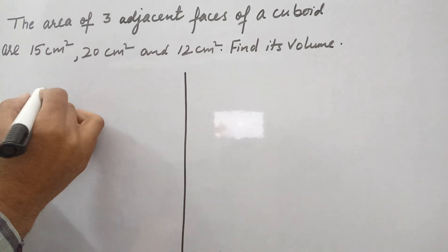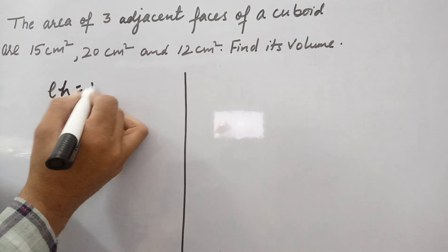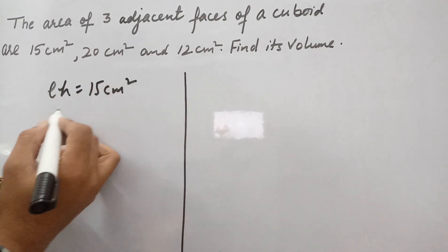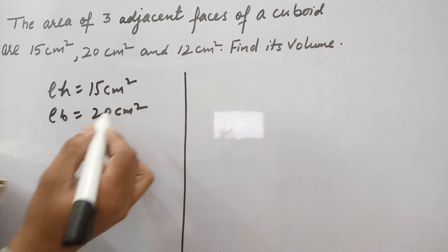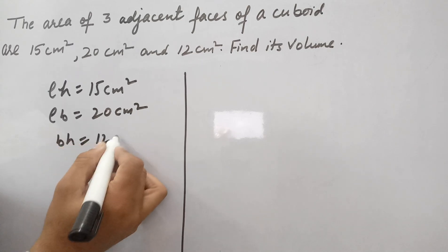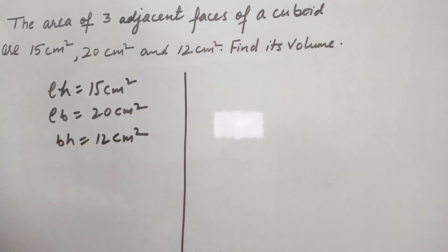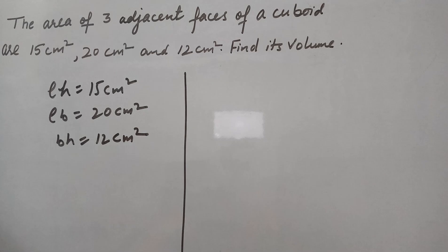So we have here LH given to us as 15 cm², and LB is given to us 20 cm², and then BH is given to us, that is 12 cm². We need to find out LBH.